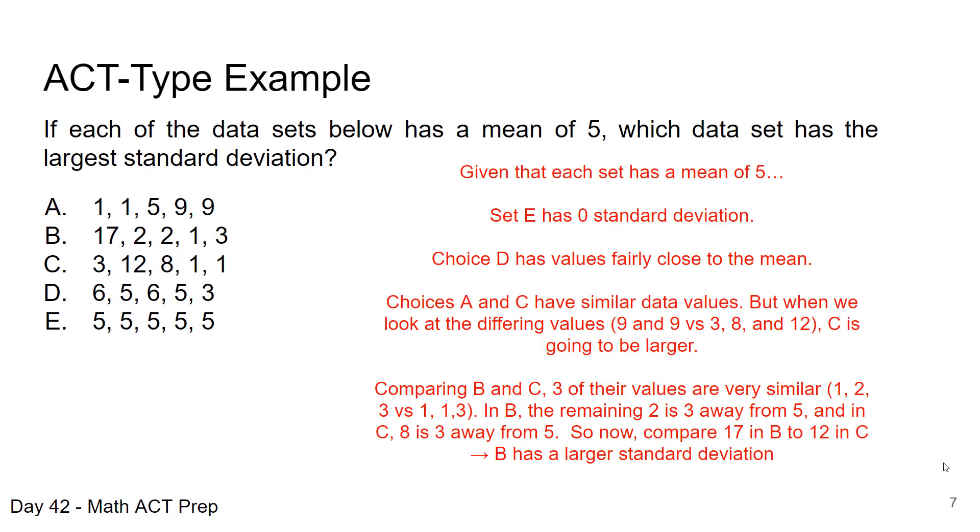But if you'll notice, again, with our mean being 5, that 2 is 3 units away from 5, the mean, and 8 is 3 units away from 5. They're just in different directions. But remember from our calculation, we're going to square that.